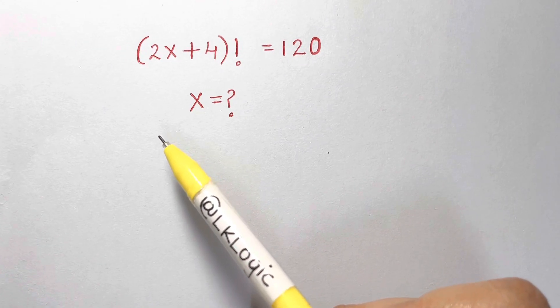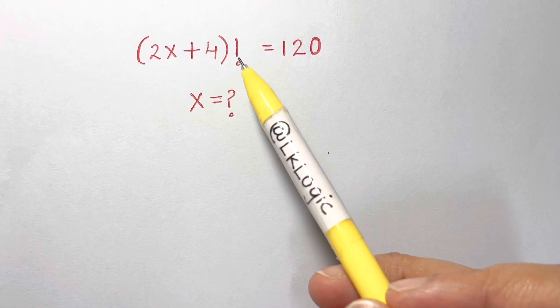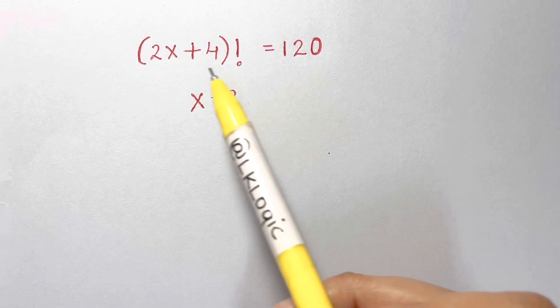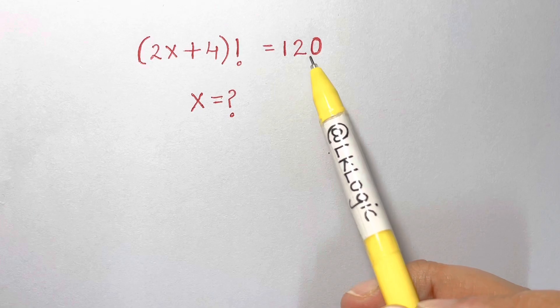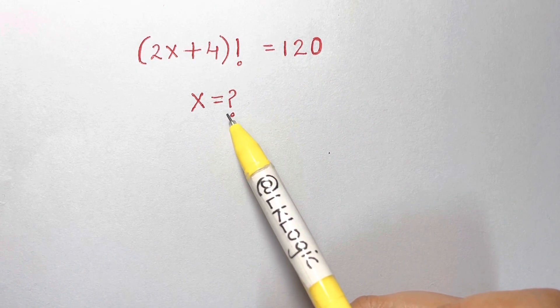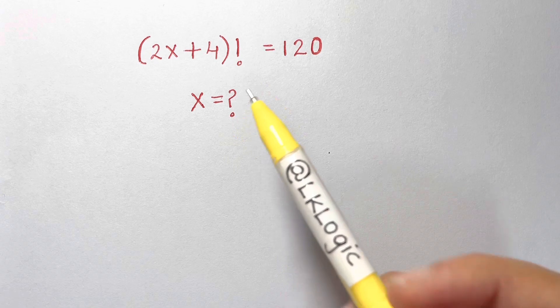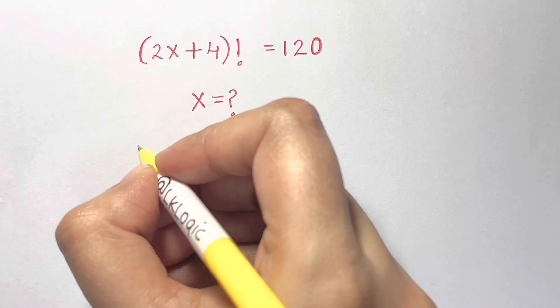Hi everyone, I have a very nice Math Olympiad factorial question here that says (2x + 4)! = 120. What is the value of x? So here what we're going to do is just write it: (2x + 4)! = 120.